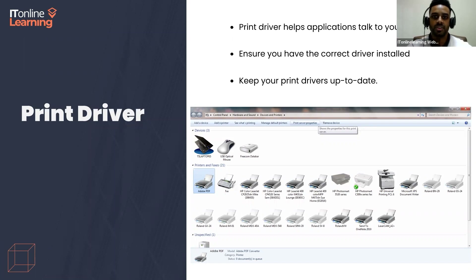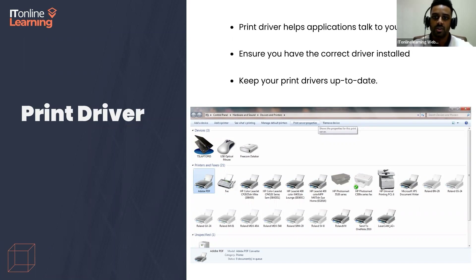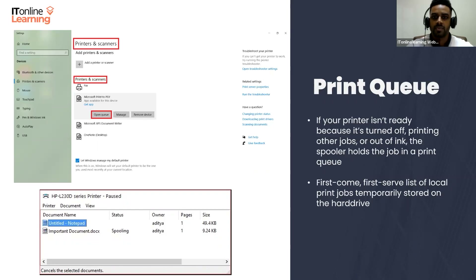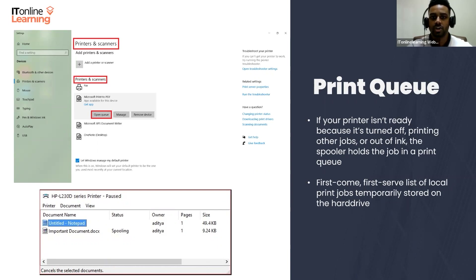Soon the spooler reaches out to find your printer. If it's ready, the spooler sends out the job, and at this point the job has finished spooling and your report's journey is finished when it's printed. But if your printer isn't ready because it's turned off, printing other jobs, or out of ink, the spooler holds the job in a print queue.